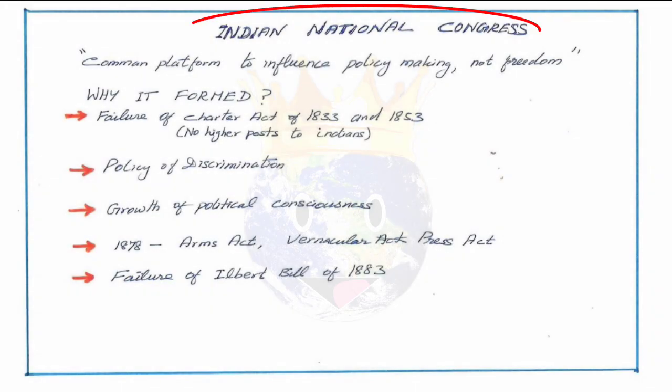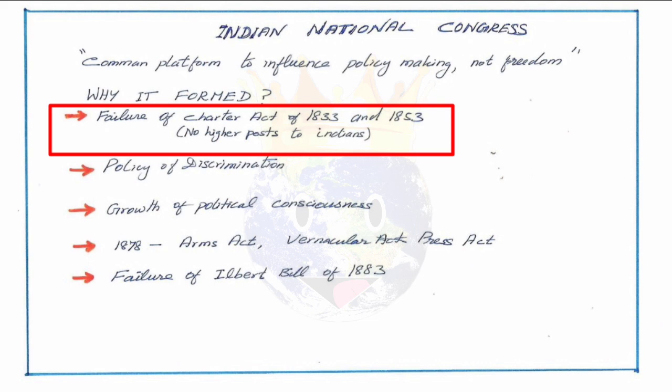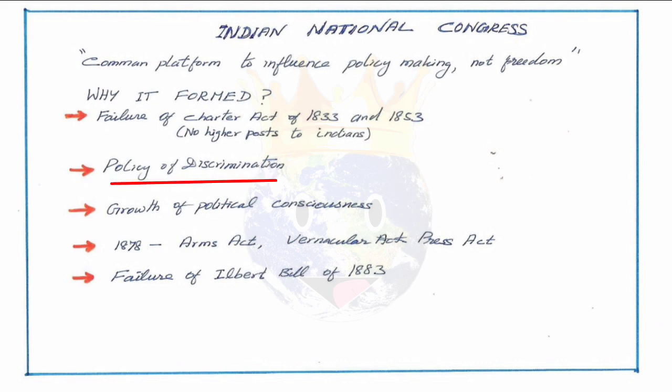Next, we will see the formation of the Indian National Congress. The INC formed due to many reasons. Since most Indians had come in contact with Europeans, they had modern ideas of liberty, human rights, and democracy, and did not want to be under anyone's rule. The British also promised to give certain things which they failed to do — starting with the Charter Act of 1833 and 1853, where they promised higher posts for Indians but did not fulfill it. The policy of discrimination in the divide and rule policy also denied higher posts to Indians, while Indian people were becoming day by day more politically conscious and their national feelings were growing.